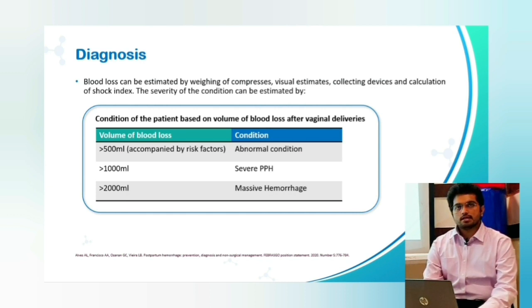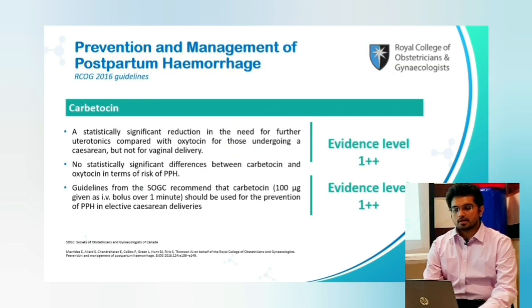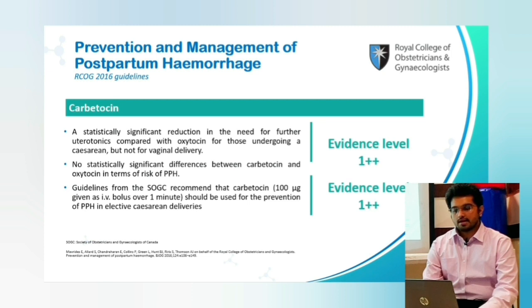Regarding the RCOG 2016 guidelines on carbutocin: a statistically significant reduction was seen in the need for further uterotonics compared with oxytocin for those undergoing a cesarean section, but not for vaginal delivery. No statistically significant differences were seen between carbutocin and oxytocin in terms of the risk of postpartum hemorrhage. The Society of Obstetrics and Gynecology of Canada (SOGC) recommended that carbutocin 100 micrograms given as an IV bolus over 1 minute should be used for the prevention of PPH in elective caesarean deliveries.